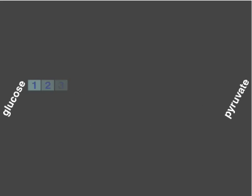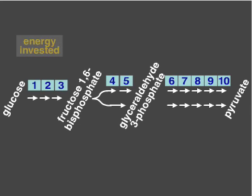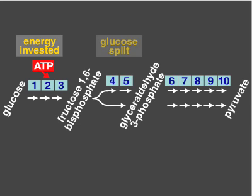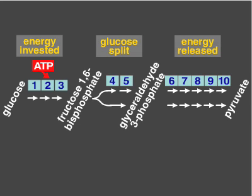Glycolysis involves a sequence of 10 steps. In the first 3 steps, energy in the form of ATP is invested to be recouped later. In the 4th and 5th steps, this energy allows glucose to be split into two smaller molecules from which energy can be harnessed efficiently. And in the last 5 steps, energy is released stepwise as ATP and NADH. The elegant chemistry that evolved to catalyze these reactions ensures that energy is released in small portions that can be efficiently captured. Less controlled combustion reactions would release most of the energy as heat.